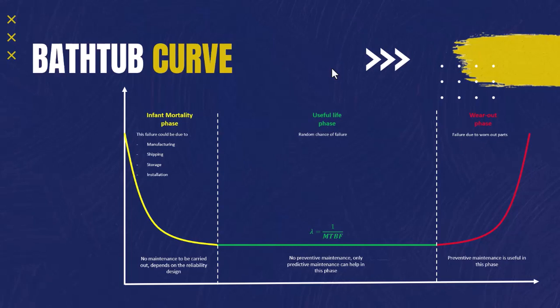One technique used to minimize this phase is called the burn-out technique. This was used by some car manufacturers such as Mercedes before non-destructive tests were developed. It simply involves running the asset for a certain period in trial mode under normal operation conditions to discover any manufacturing issues — effectively burning out the infant mortality phase. When the asset enters actual operation, it starts from the useful life phase. However, this method is very time-consuming and costly.